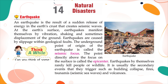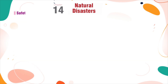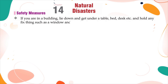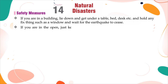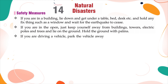Think a while: Can you think of some human activities which could be a reason for some natural disasters? Safety measures for earthquakes: If you are in a building, lie down and get under a table, bed or desk and hold any fixed thing such as a window frame, and wait for the earthquake to cease. If you are in the open, keep yourself away from buildings, towers, electric poles and trees, and lie on the ground. If you are driving a vehicle, move it away from poles and trees and stay inside.